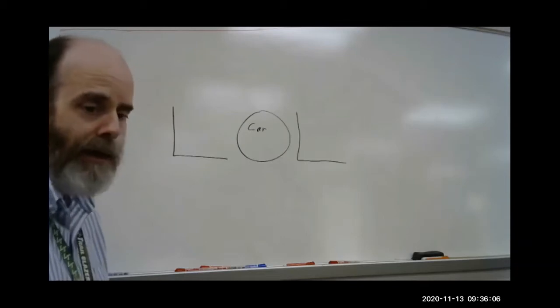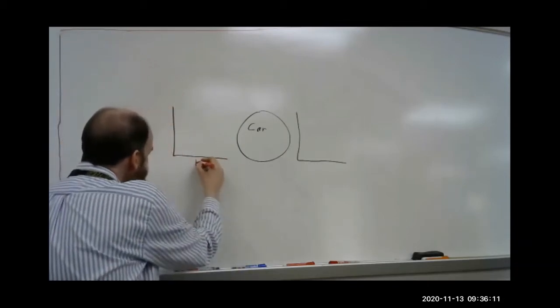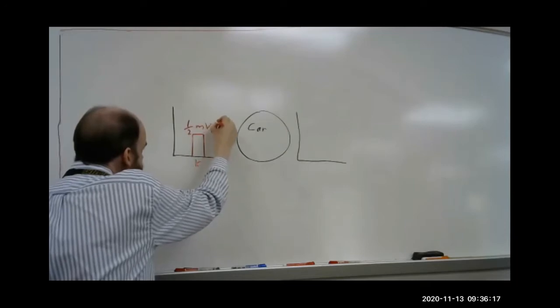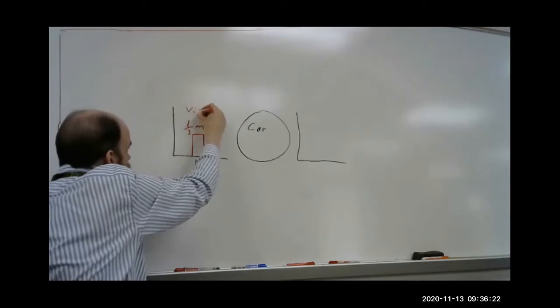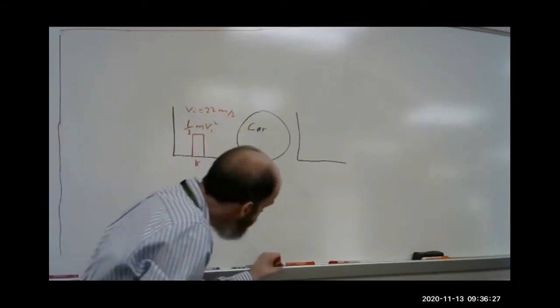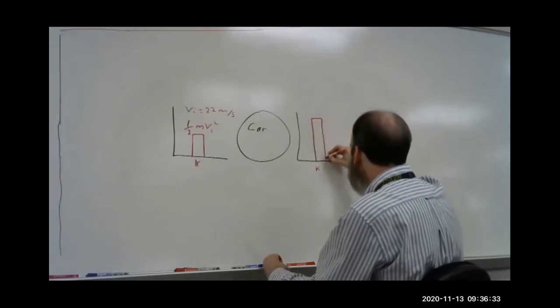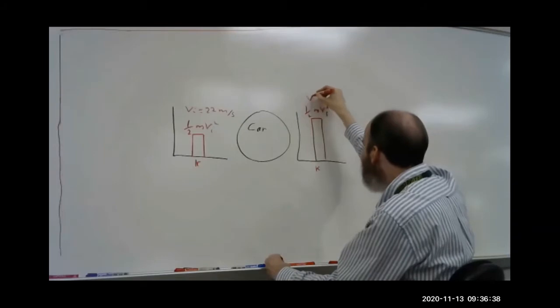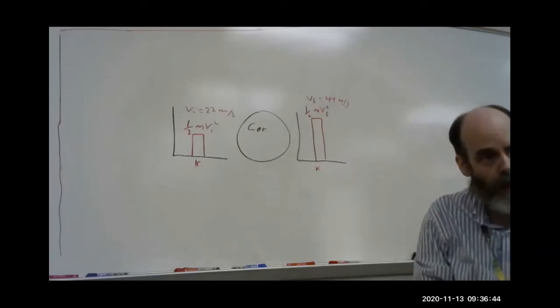So the energy of the car is going to be kinetic energy. So we start with some initial kinetic energy, so a half m v initial squared. And the v initial was 22 meters per second. And at the end, we also have kinetic energy, but now we have more kinetic energy. A half m v final squared. And v final is 44 meters per second.